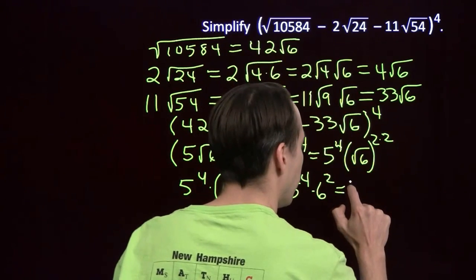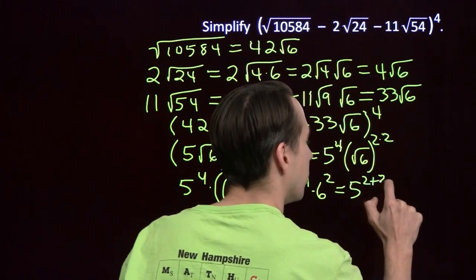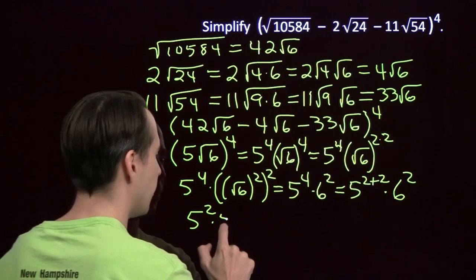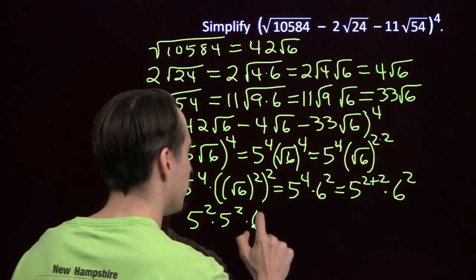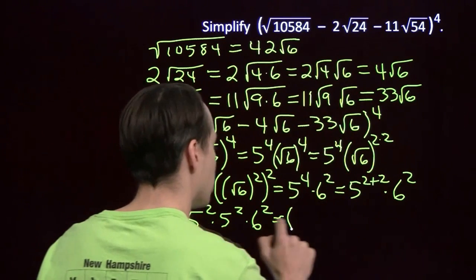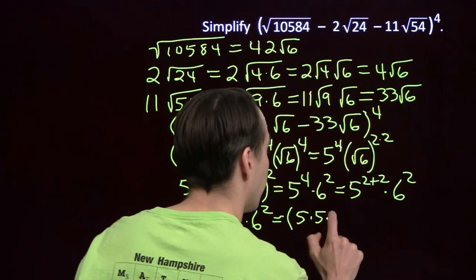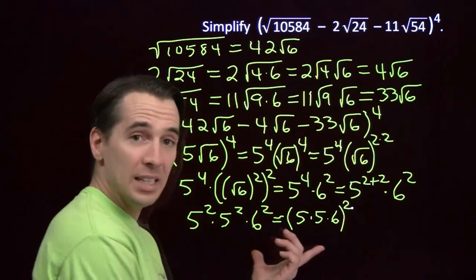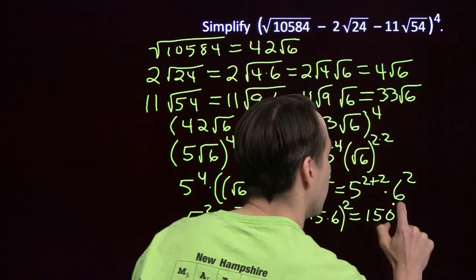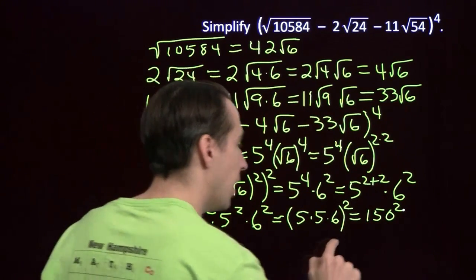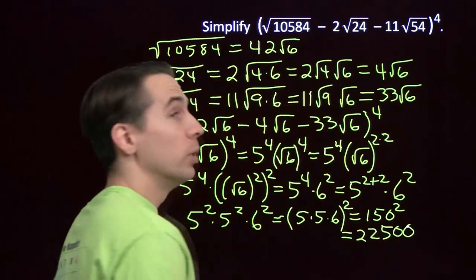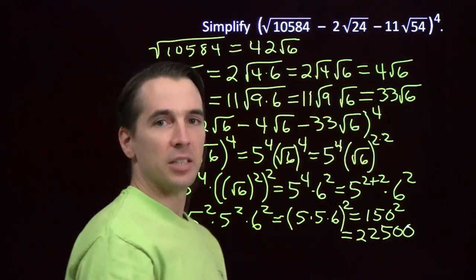To work this out, I'll write 5 to the fourth as 5 squared times 5 squared — that's just 5 to the fourth because you have four fives total. Now I have a product of squares, and I can write that as the square of a product: the product of 5 times 5 times 6. 5 times 6 is 30, 30 times 5 is 150. So we have 150 squared. 15 squared is 225, so 150 squared is 22,500, which is way simpler than the giant mess we started with.